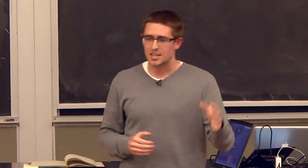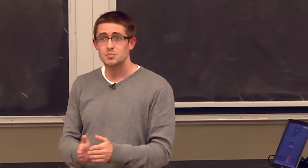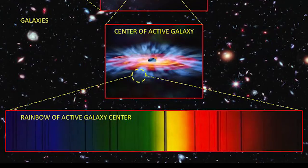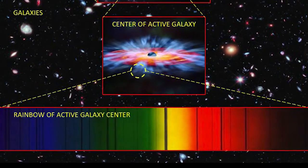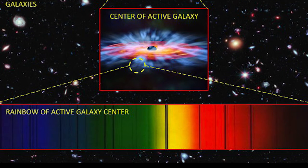Telescopes today can collect the light from a galaxy and split it into a rainbow, just like you see here. This is very important because the rainbows coming from these active galaxies have dark lines in them, and these lines hold precious information about the black hole winds.